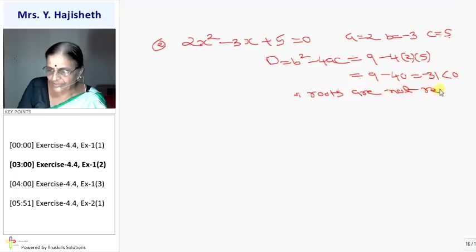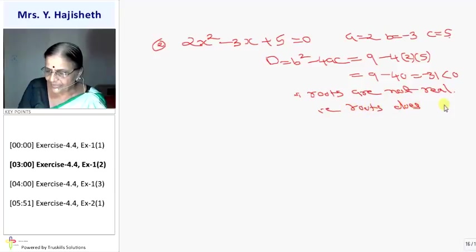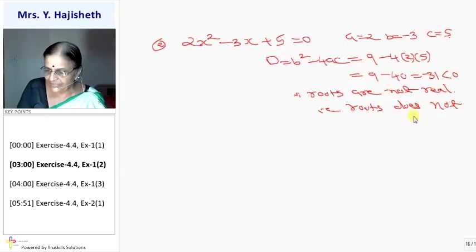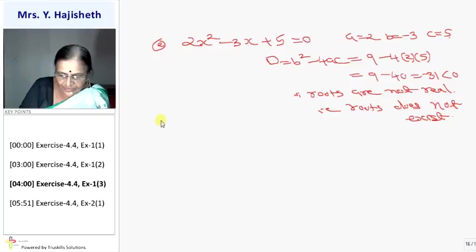Since D is less than 0, roots are not real. It means roots do not exist. When roots do not exist, we need not find out the roots by any method.